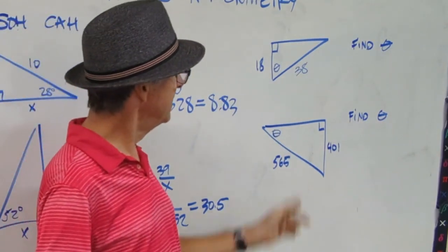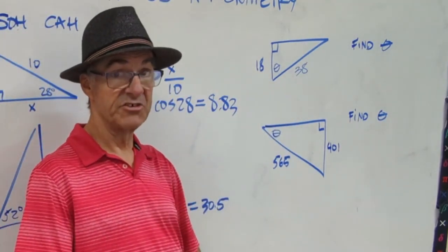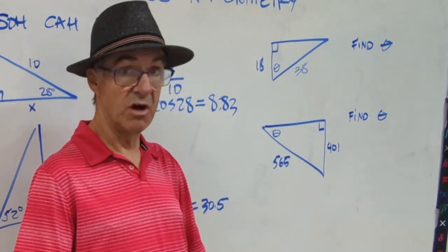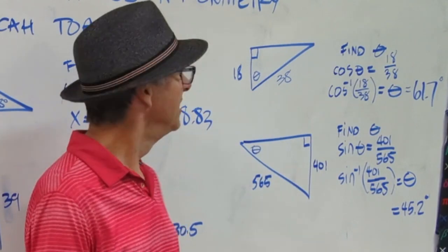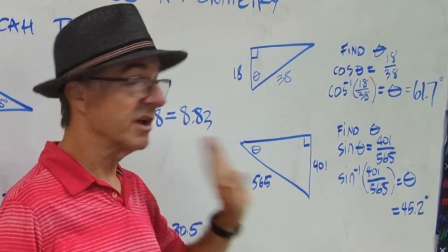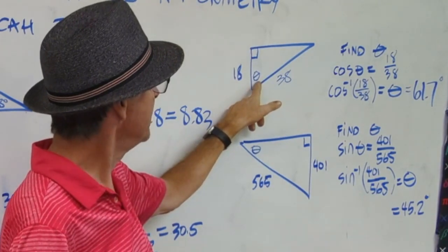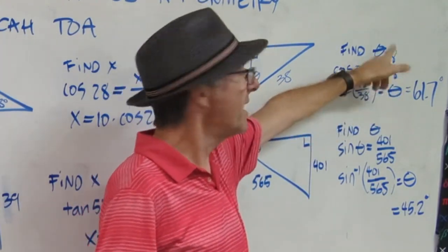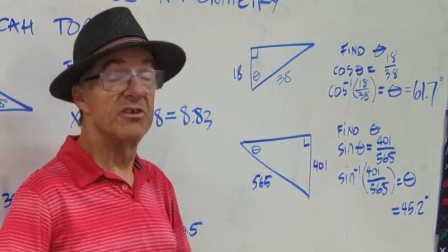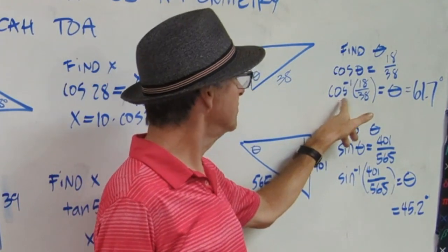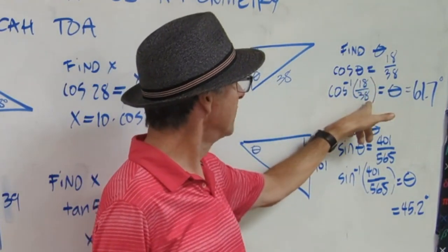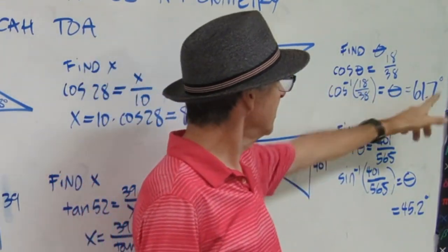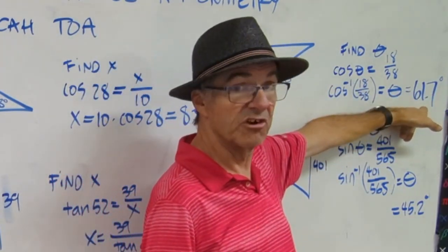Now we're being asked to find angles. Pause the video and solve these two. For the first one, I set up my trigonometric equation: cosine theta equals 18 over 38. I know my sides but not my angle, so I use the inverse trig function — cosine minus 1 of 18 over 38 equals theta. You need to know how to do this on your calculator, and when you put that in, you get 61.7 degrees for theta.